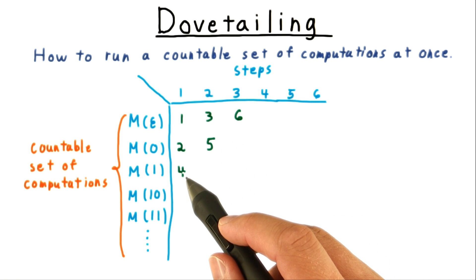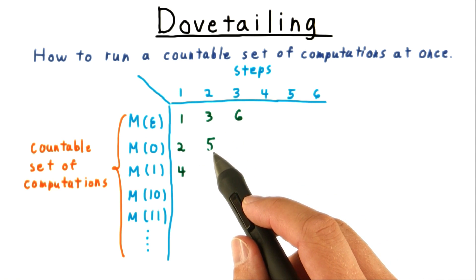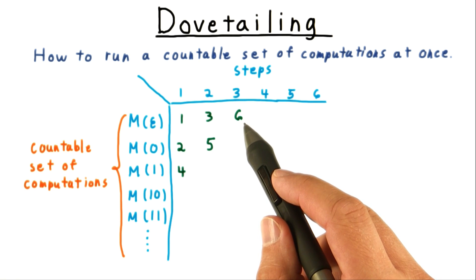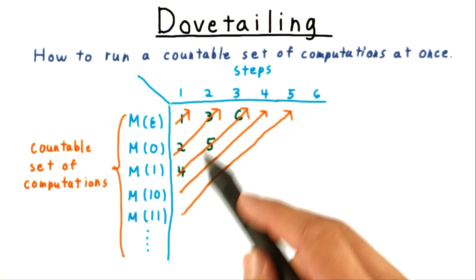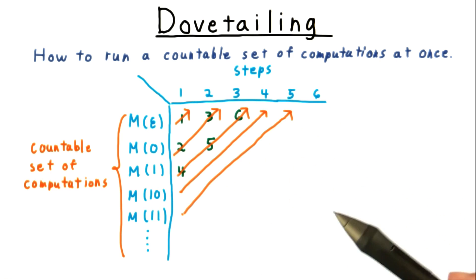Then the third computation for one step, the second computation for two steps, and the first computation for three steps. And we just keep going, diagonal by diagonal. Eventually, every configuration in the table is reached.